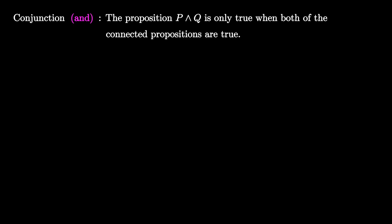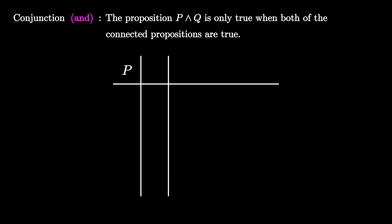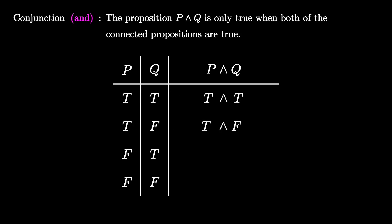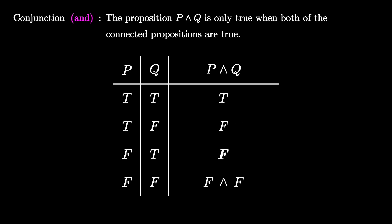The NOT connective is a unary connective because it goes in front of one proposition. But the conjunction, or the AND connective, connects two propositions, so it's a binary connective. The proposition P AND Q is true only when both of the connected propositions are true. To build the truth table, we need two columns for P and Q and a third column for the connective. There are four possibilities: true and true, true and false, false and true, and false and false. This is only true when both pieces are true, which happens in the first row only. Therefore, TFFF is the truth table for the AND connective.